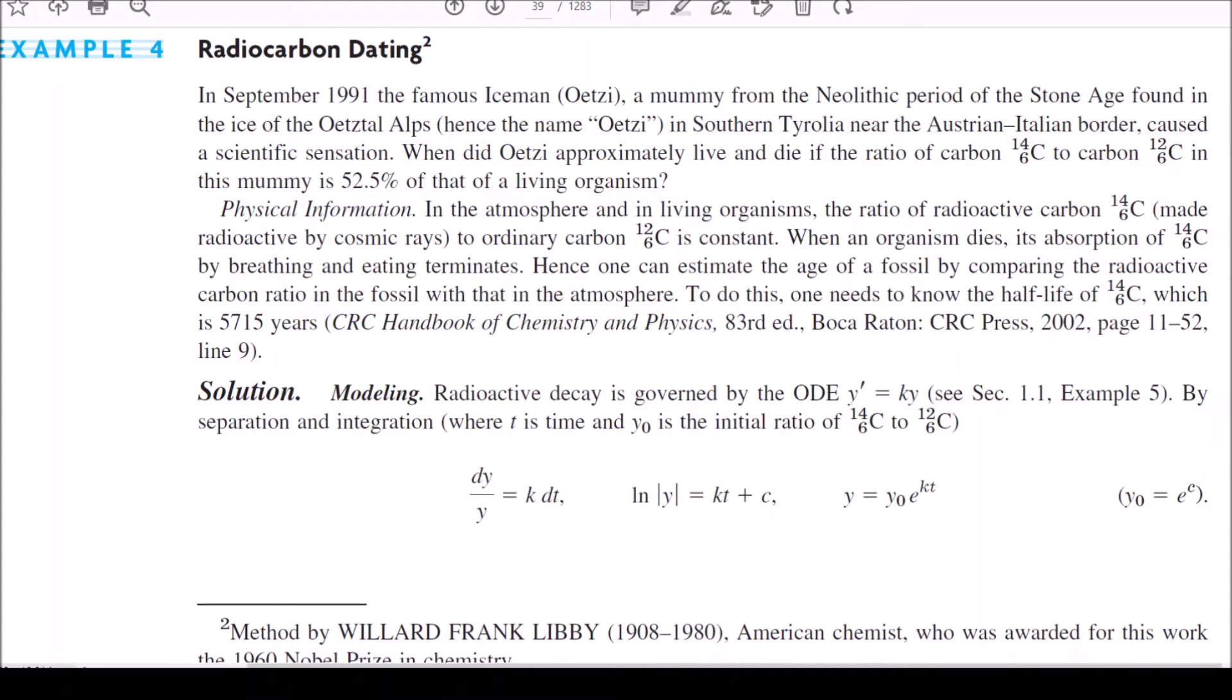So that's what we want to say, for how many years did he live and die. What information is given in the atmosphere and in living organisms is the ratio of 14C6. When organism dies, its absorption of 14C6 by breathing and eating terminates. This helps us estimate the age of a fossil by comparing the radioactive carbon ratio. To do this, we need to know the half-life period of 14C6, which is 5715 years.